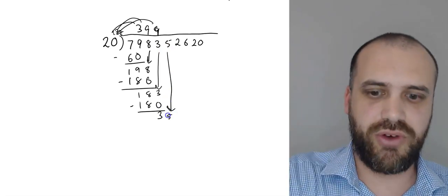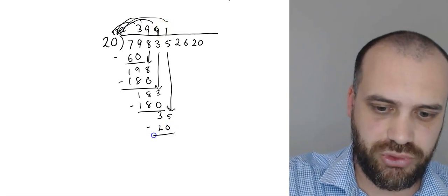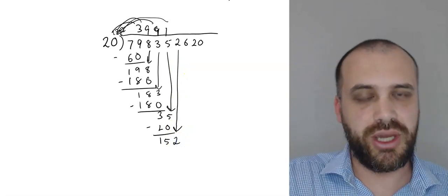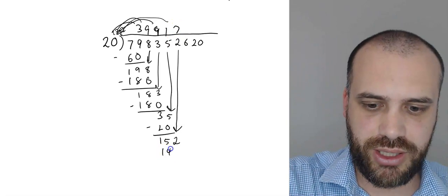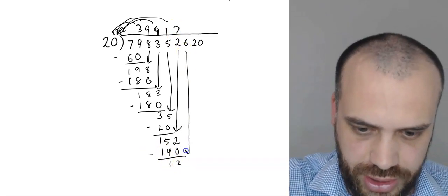35. 20 goes into 35 once. Multiply. 1 times 20 is 20. Subtract one from the other. 15. Drag this one down. 152. 20 goes into 152 seven times. That's 140. Subtract one from the other. We get 12. Bring the next one down.